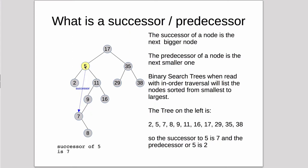When we're deleting a node with two children, we go to the right node, and if it has any left, we keep following the left until we can't go any further, and that's going to be the successor.